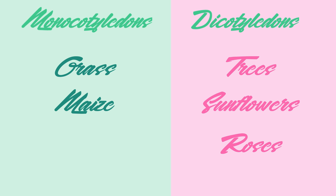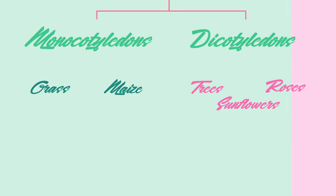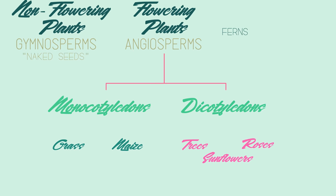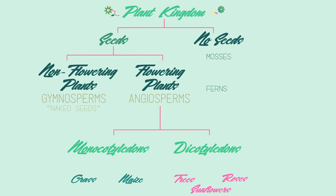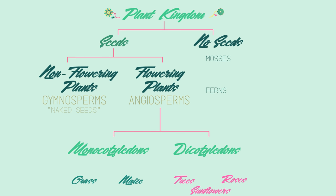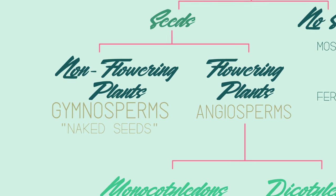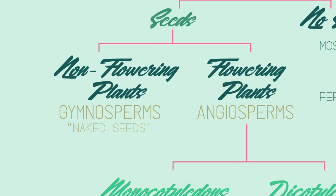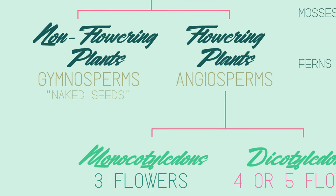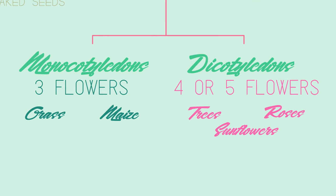So there we have some of the ways plants are classified. Remember that non-flowering plants are called gymnosperms and have naked seeds, and that flowering plants are called angiosperms, which can be separated into monocots and dicots.